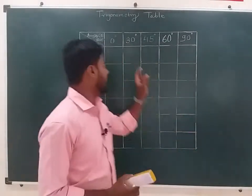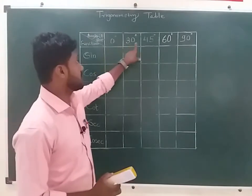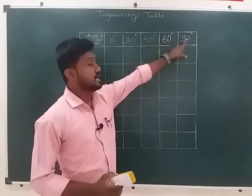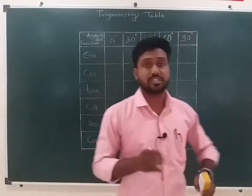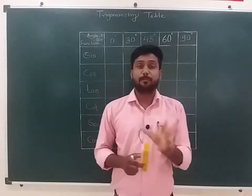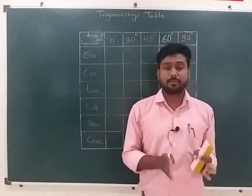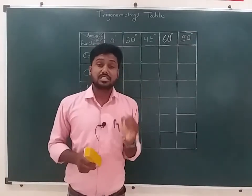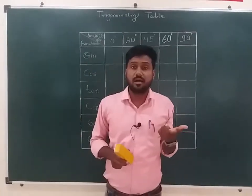We will apply the degree values: 0, 30, 45, 60, and 90. The key degree points are 0, 30, 45, 60, and 90. We need to solve using a table for these values.